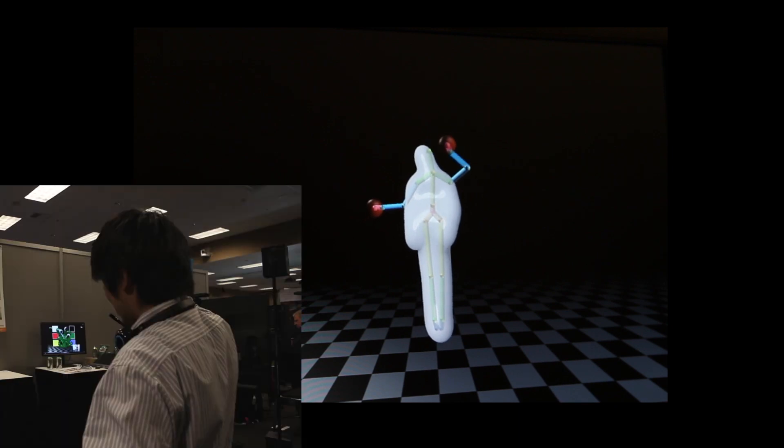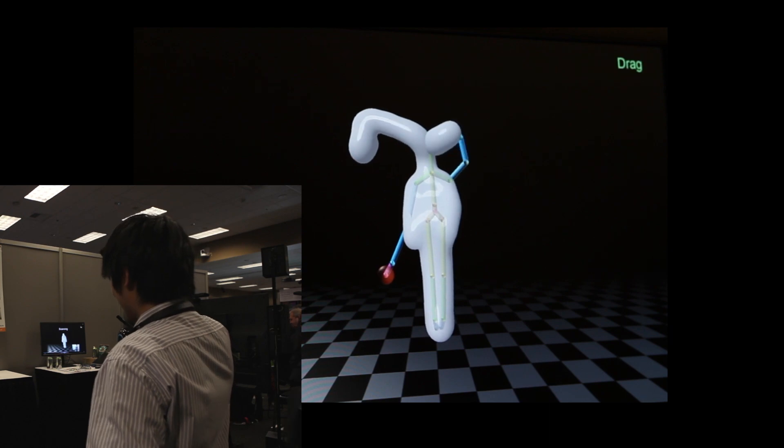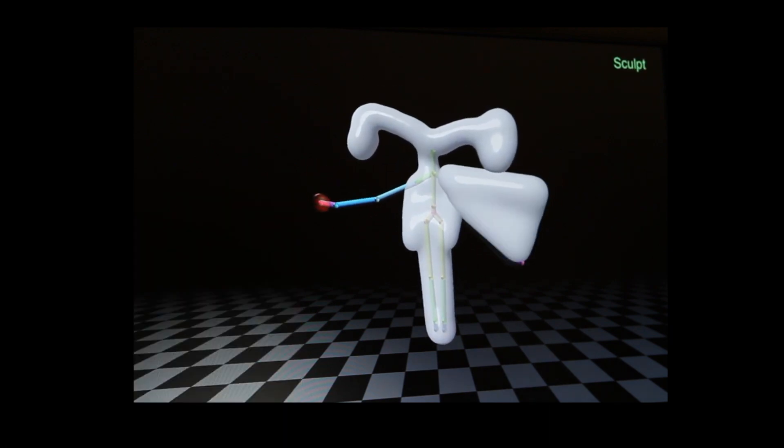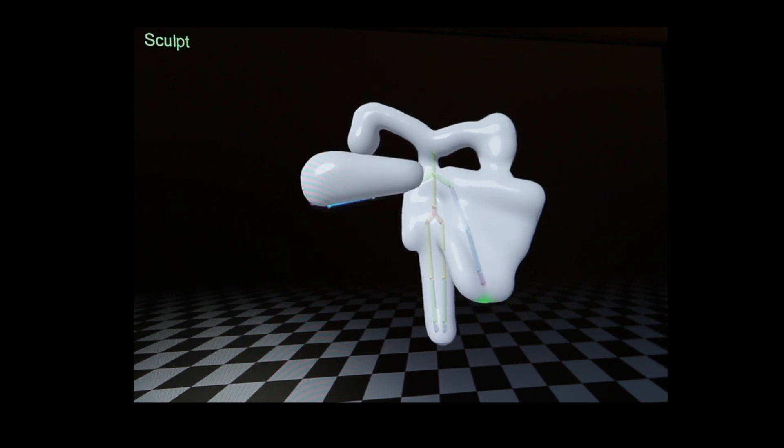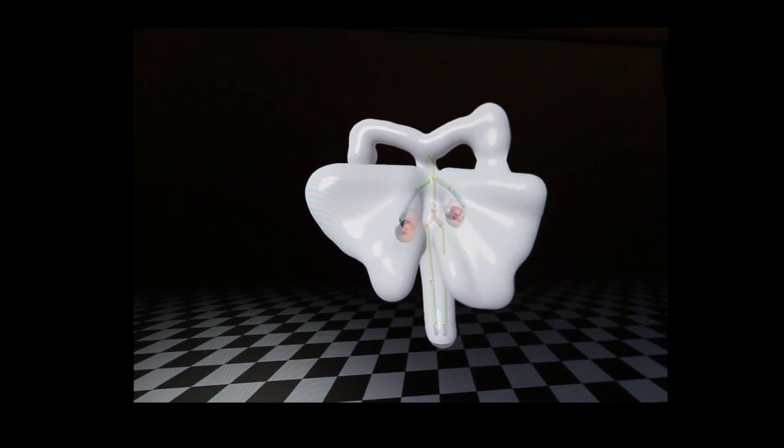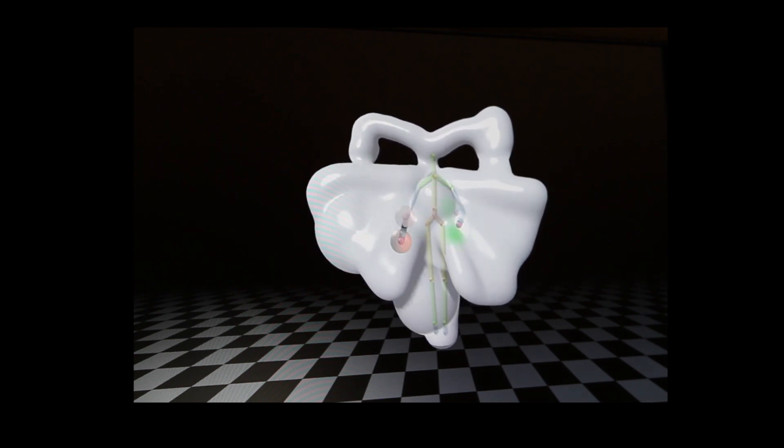For example, I can pinch to my own head to create an antenna. Or I can sweep my hand to create a wing. And if I want to grow a big tummy, I can literally gesture around my own tummy to make a big one.